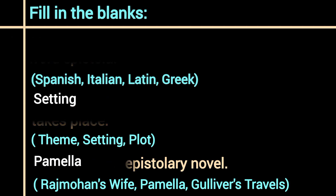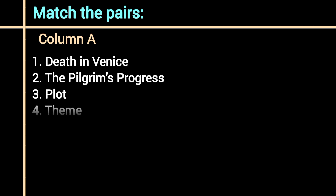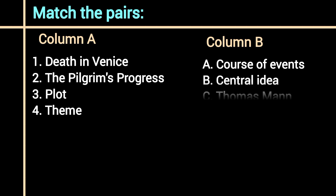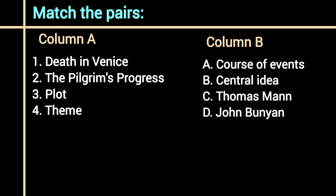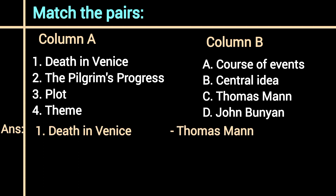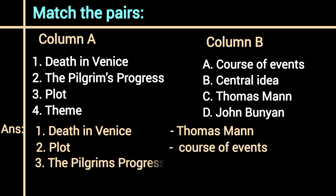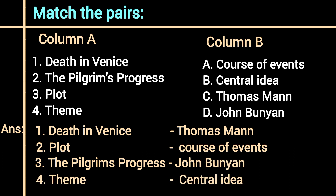Next exercise: match the pairs. Two columns are given. In column A: Death in Venice, The Pilgrim's Progress, Plot and Theme. In column B: Course of Events, Central Idea, Thomas Mann and John Bunyan. Death in Venice is a novella written by Thomas Mann. Plot means the course of events. The Pilgrim's Progress is written by John Bunyan in 1678. Theme means the central idea.